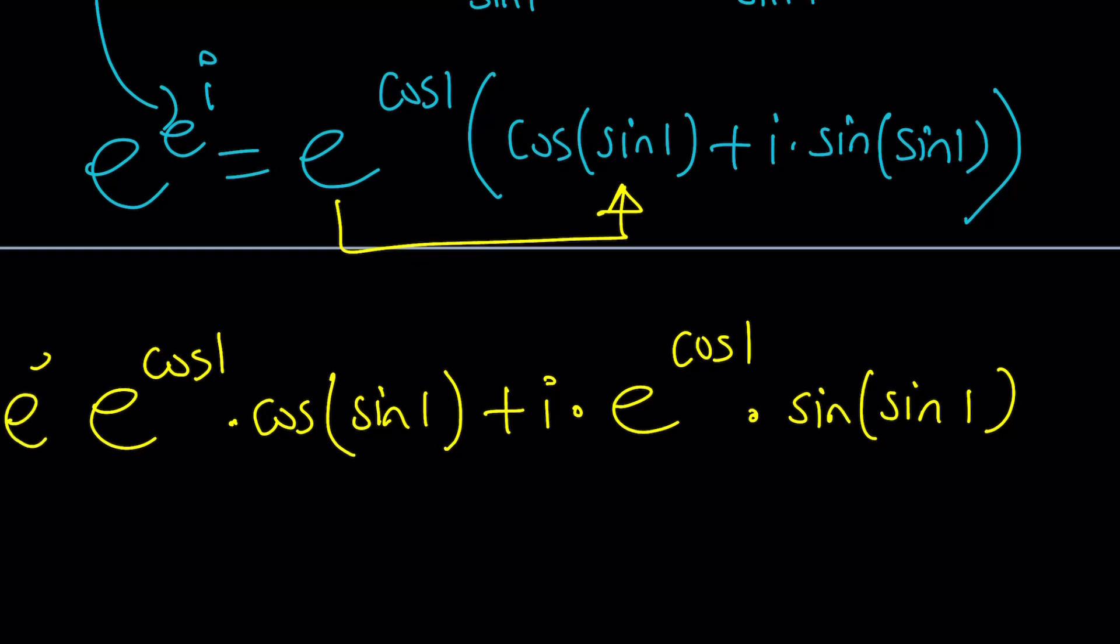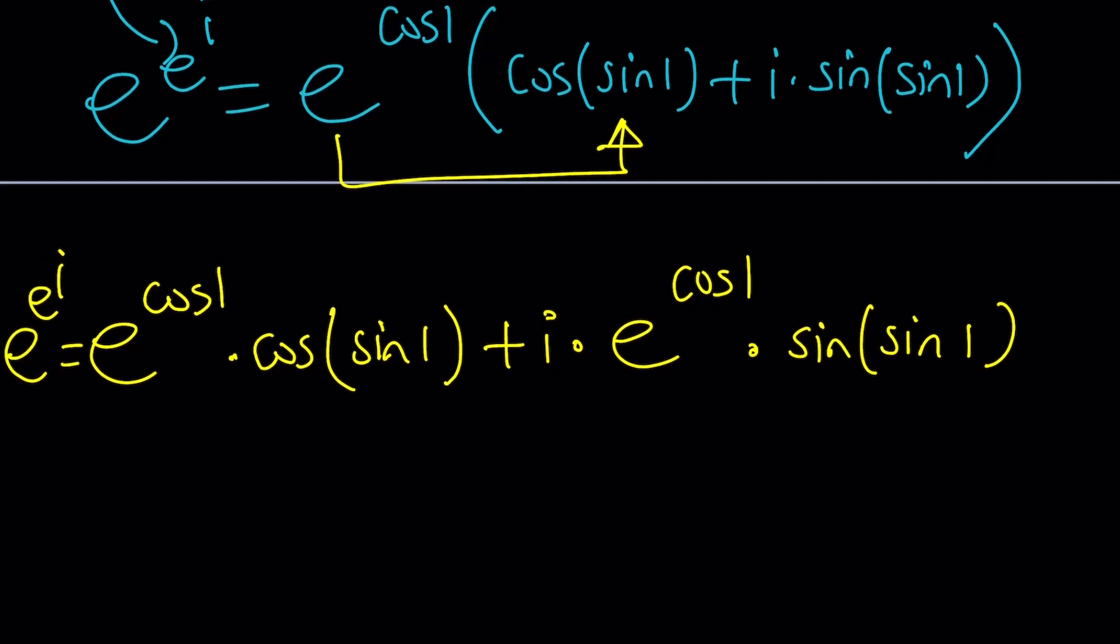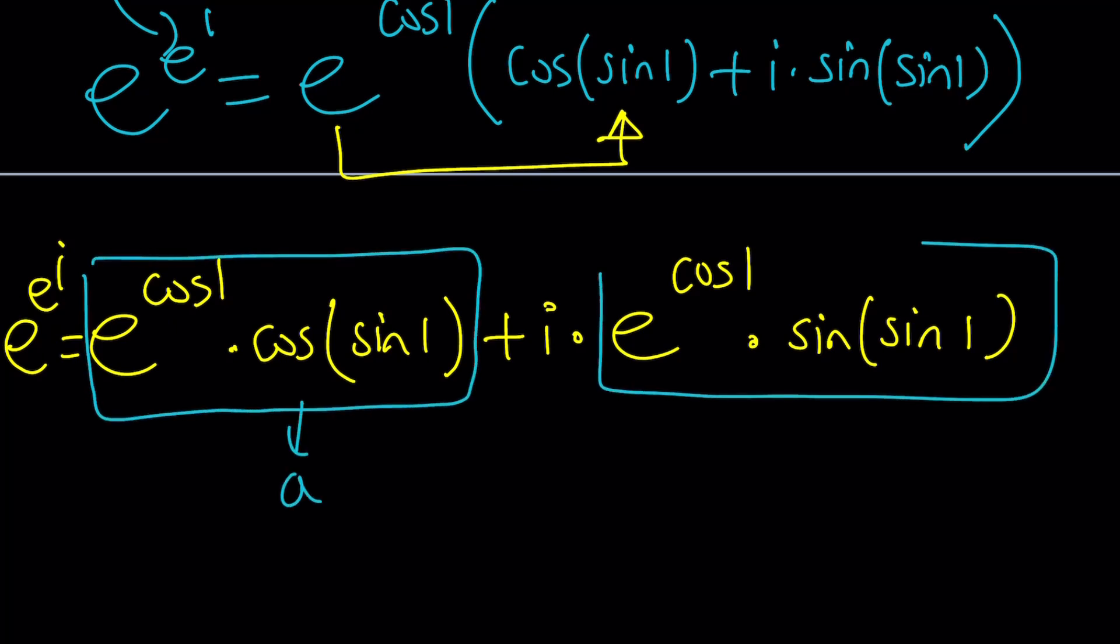So this is our expression, and this is e to the e to the i. And we said that it can be written as a plus bi. So this is a, and this is b. Well, I kind of wrote it as a plus ib, but guess what? A plus ib is the same as a plus bi. Should I name the channel a plus ib? I don't know.